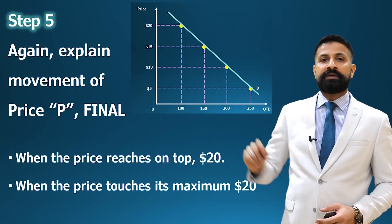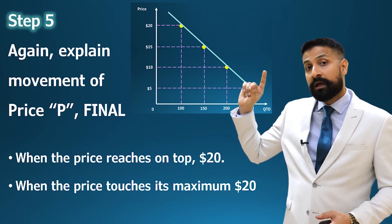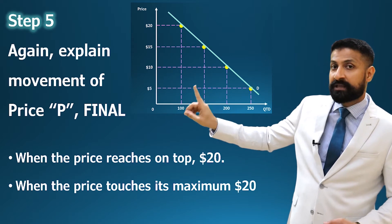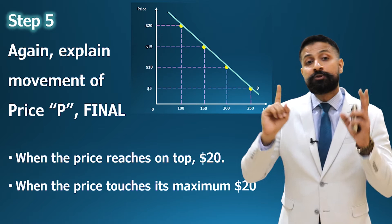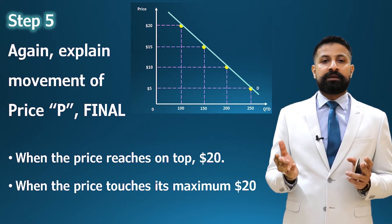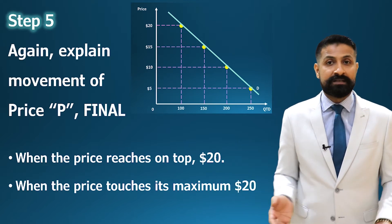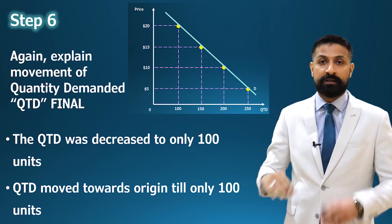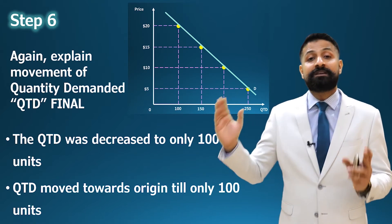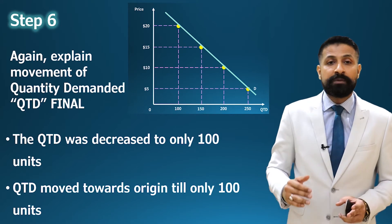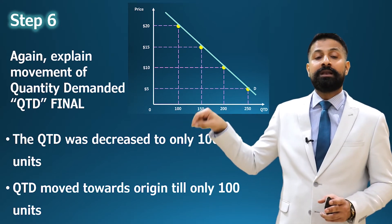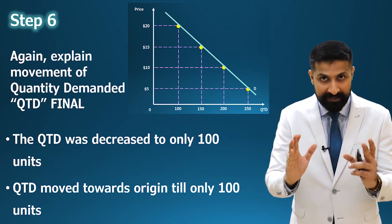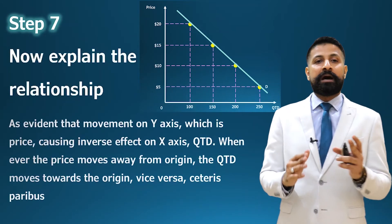Step number five: explain the y-axis one last time. You say: 'When the price reaches on top' — here you jump to the final value — '$20.' Alternatively: 'When the price touches its maximum, $20.' That's it. Step number six: go back to the x-axis and explain its last point. You say: 'The quantity demanded decreased to only 100 units,' or 'QTD moved toward the origin till only 100 units.'